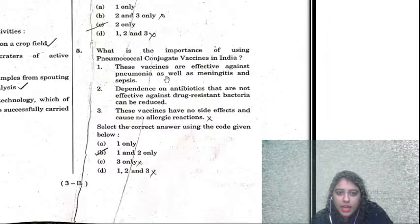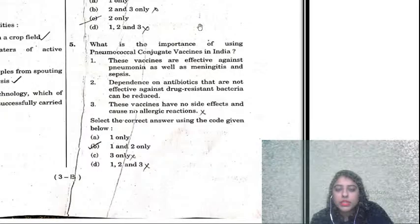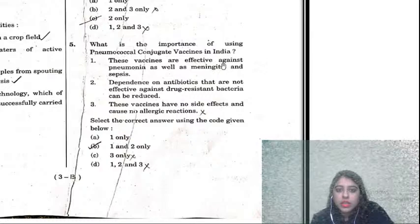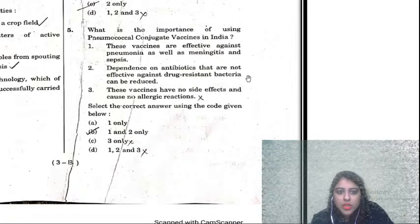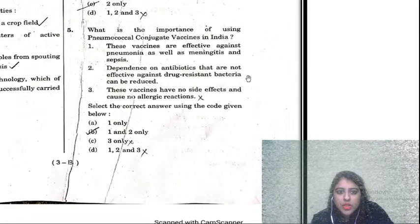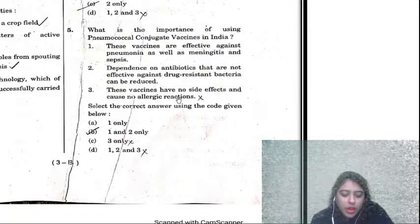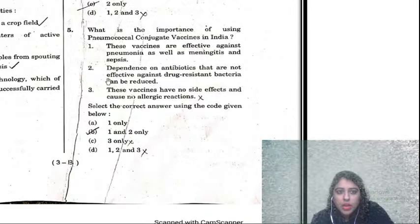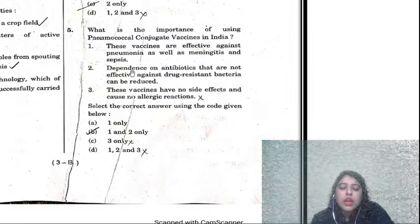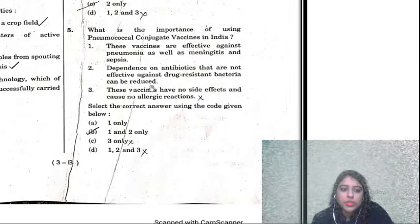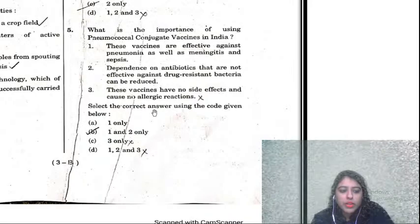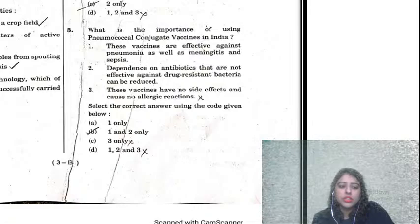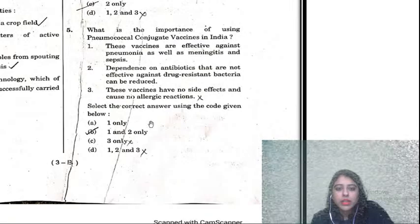Question five asks about the importance of using pneumococcal conjugate vaccines in India. The options include: these vaccines are effective against pneumonia as well as meningitis and sepsis; dependence on antibiotics not effective against drug-resistant bacteria can be reduced; and these vaccines have no side effects. The correct answer is B — only one and two — because vaccines can have side effects and allergic reactions depending on the human body, so statement three is incorrect.